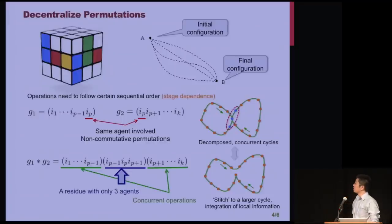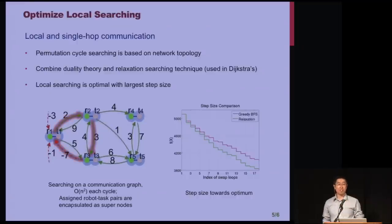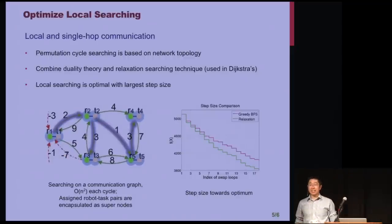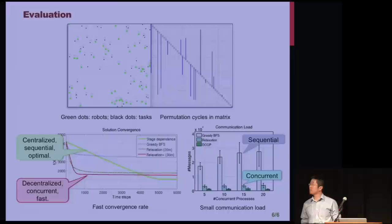So we have mitigated such dependency by decomposing the sequential and dependent cycles into concurrent and non-dependent permutations, which, however, relies on a small residue cycle with only three agents. In other words, the decomposed larger cycles can be executed in a decentralized manner, conditioning on that the residue small cycle is adjusted accordingly in the later step. So another challenge lies in the solution optimization and convergence. With only local information and single-hop communication, we want to obtain the largest step size towards the optimal solution.